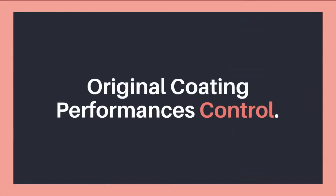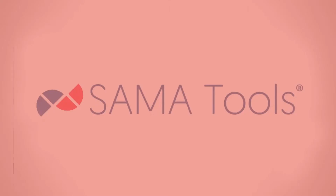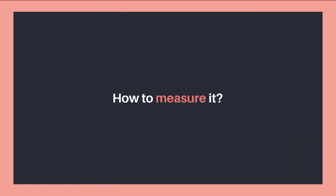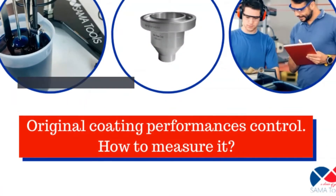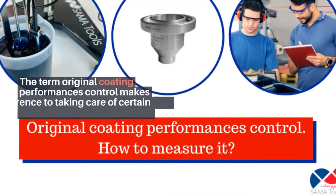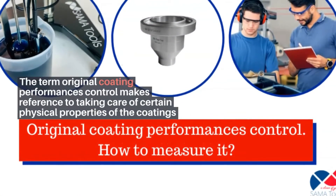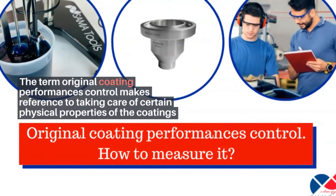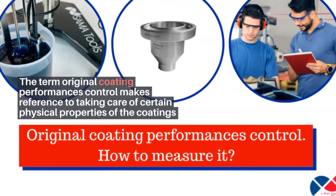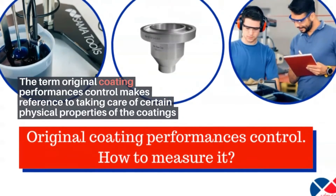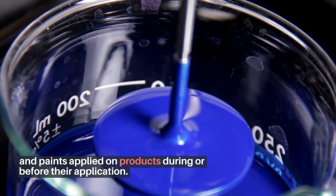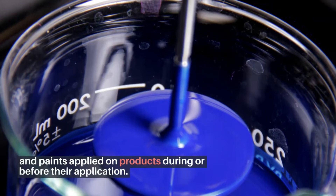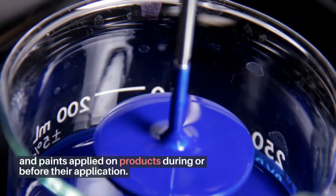Original Coating Performances Control — how to measure it. The term Original Coating Performances Control makes reference to taking care of certain physical properties of the coatings and paints applied on products during or before their application.